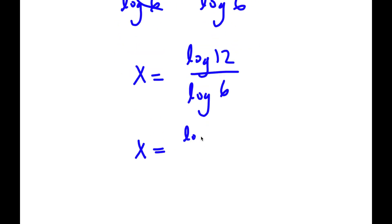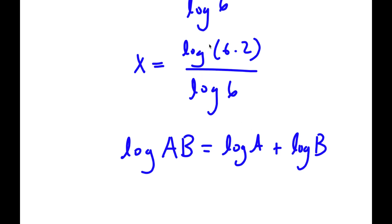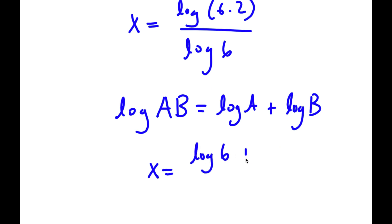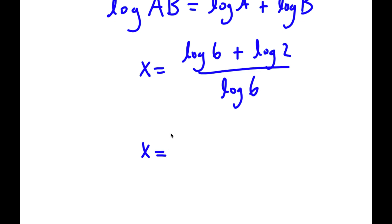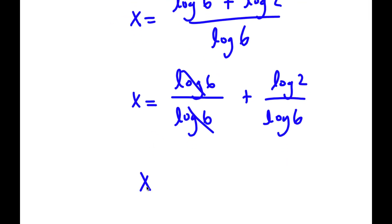Now, log 12 is the same thing as log of 6 times 2, over log 6. If I have something in the form log a times b, this is equal to log a plus log b. So log of 6 times 2 can be written as log 6 plus log 2, over log 6. This is the same as log 6 over log 6 plus log 2 over log 6. Log 6 and log 6 cancel out, so x equals 1 plus log 2 over log 6.